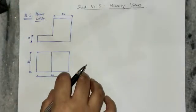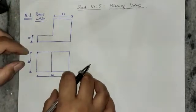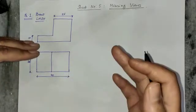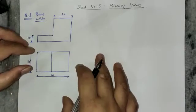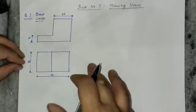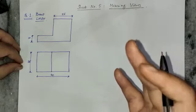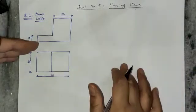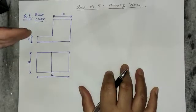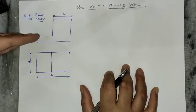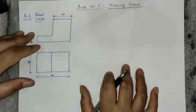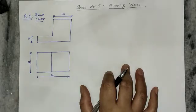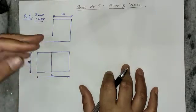Hello, my dear students. Welcome to this video. This is sheet number 5, which is missing views. In last semester you have already learned orthographic projection. In orthographic projection, you are given an isometric projection or isometric view, and from that isometric view you are required to draw the top view, front view, or side views.